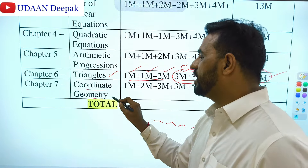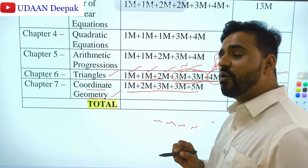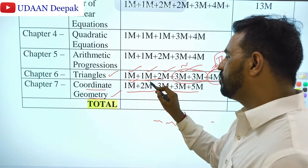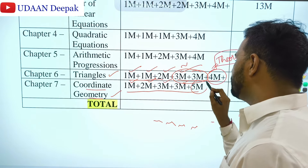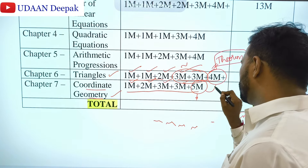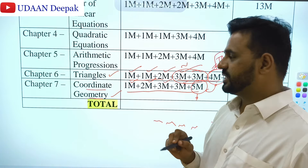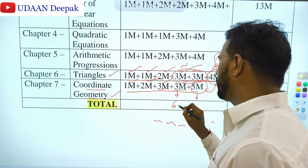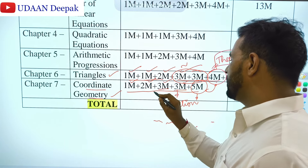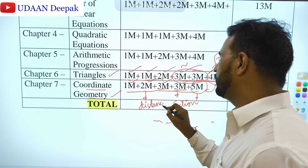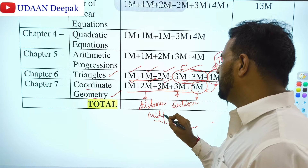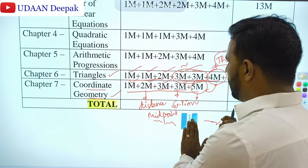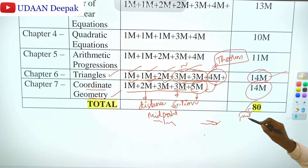Chapter 7 — Coordinate Geometry — you can expect 5 questions: one objective, one 2-mark, and one 3-mark question. There are no 4-mark or 5-mark questions from this chapter — those come from other chapters. For the 3-mark question, you should know the Section Formula. For the 2-mark question, you will get the Distance Formula. For 1-mark, you can expect the Midpoint Formula. Questions related to these three formulas will appear.